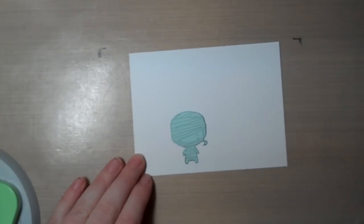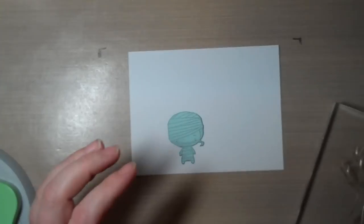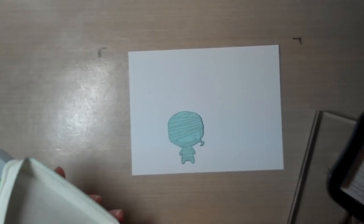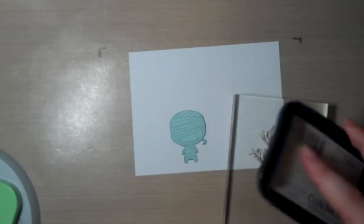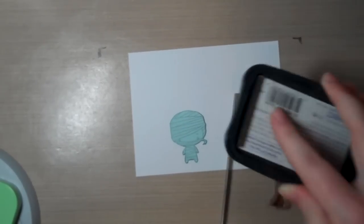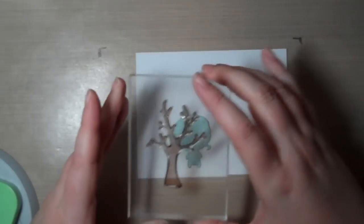Now I'm going to take my second stamp and I'm going to be using this tree. It's from an old October Afternoon set, let's see which set is it? It is the Home Sweet Home set. And I am actually inking it up with the Rich Cocoa Memento ink, which is another nice alternative to Tuxedo Black and it still works nicely with the Copic markers.